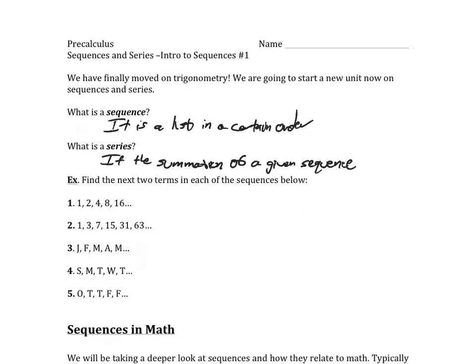Number one is pretty obvious — the terms are just doubling based off the previous term: 1, 2, 4, 8, 16. So the next two numbers: doubling 16 gives 32, then doubling 32 gives 64. The rule is simply 'double the previous number.'